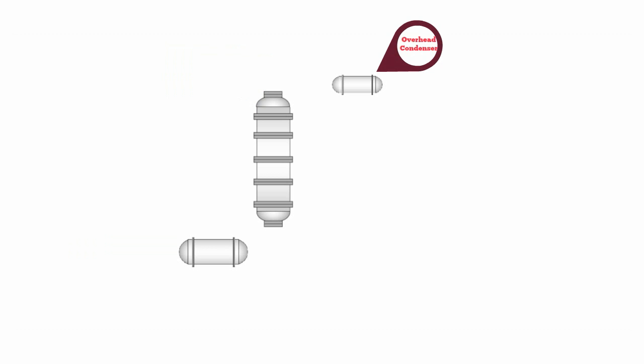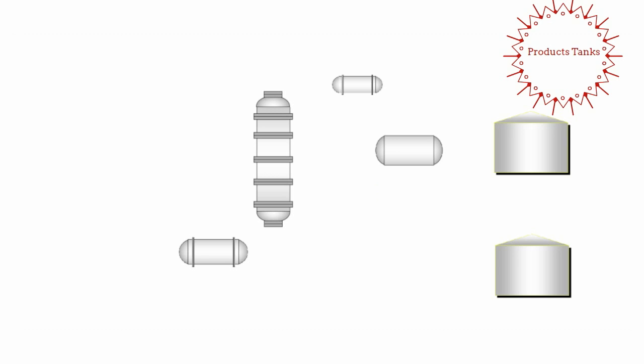From this condenser, it's going to go to a reflux drum where it is then sent back to the top of the column partially as well as sent to a products tank. You have your products tank which is going to be receiving part of its supply from the reflux drum on the top tank, and the bottom tank is going to be receiving its supply from the reboiler at the bottoms.